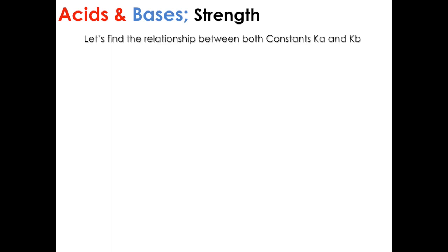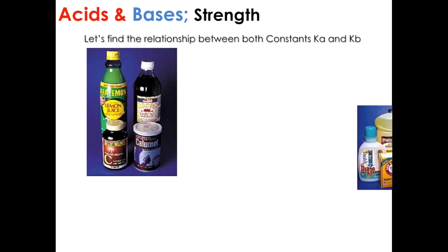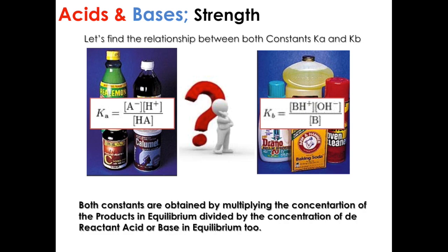Let's find the relationship between both constants Ka and Kb. As we already saw, both constants are obtained by multiplying the concentration of the products in equilibrium, divided by the concentration of the reactant — acid or base — in equilibrium.